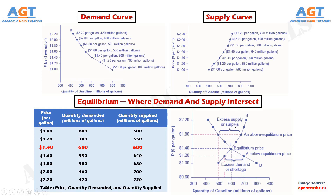We call this an excess supply or a surplus. With a surplus, gasoline accumulates at gas stations, in tanker trucks, in pipelines, and at oil refineries. This accumulation puts pressure on gasoline sellers. If a surplus remains unsold, those firms involved in making and selling gasoline are not receiving enough cash to pay their workers and to cover their expenses. In this situation, some producers and sellers will want to cut prices, because it is better to sell at a lower price than not to sell at all. Once some sellers start cutting prices, others will follow to avoid losing sales. These price reductions in turn will stimulate a higher quantity demanded. So if the price is above the equilibrium level, incentives built into the structure of demand and supply will create pressures for the price to fall toward the equilibrium.